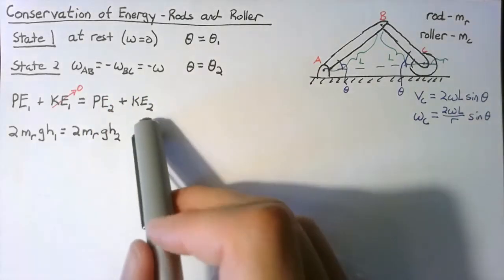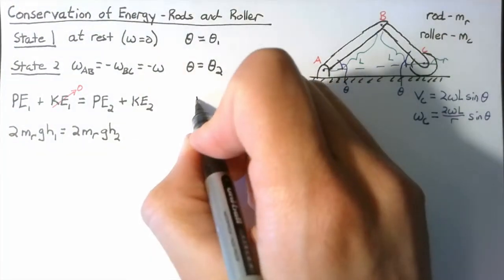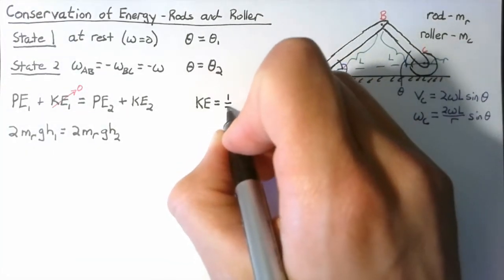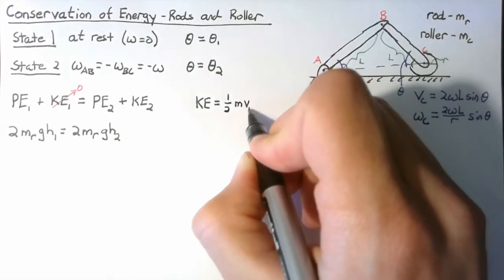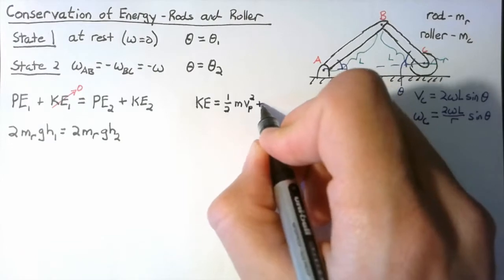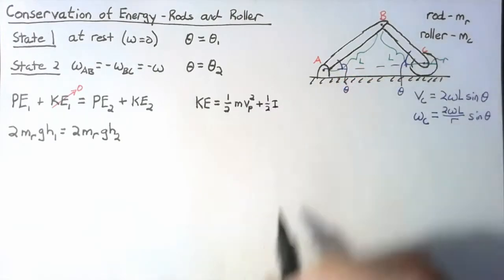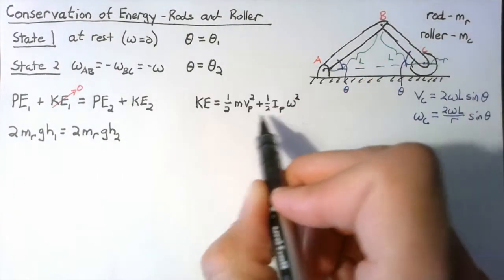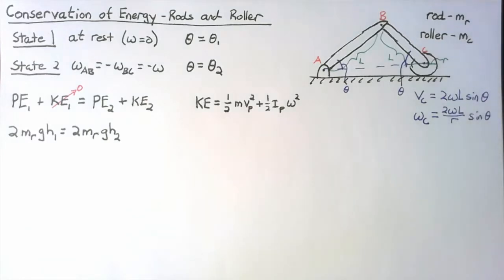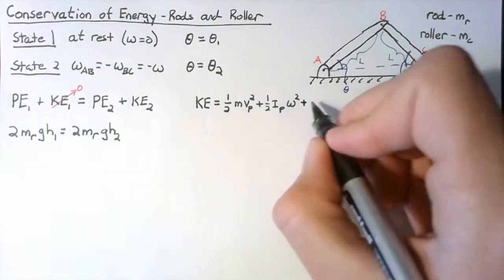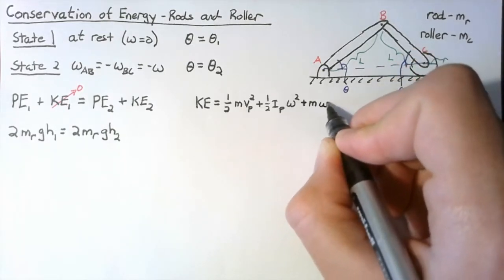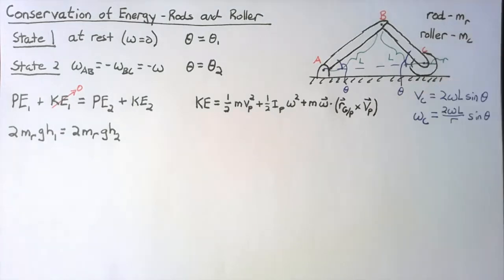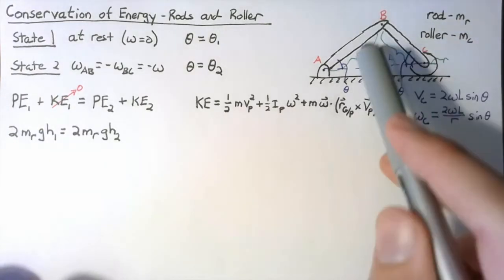For the kinetic energy of state two, we write the most general form: KE equals one-half times mass times velocity of some point p squared, plus one-half times the moment of inertia about p times omega squared. Since point p is not necessarily the center of mass, we also need a third term: mass times the omega vector dotted with r crossed with the velocity of the point. We need to write the kinetic energy for all three bodies.